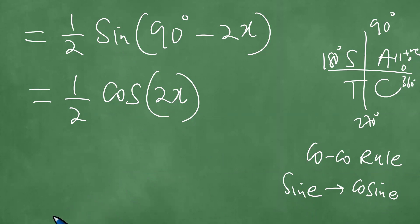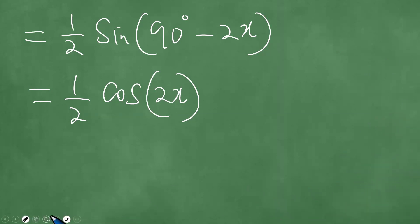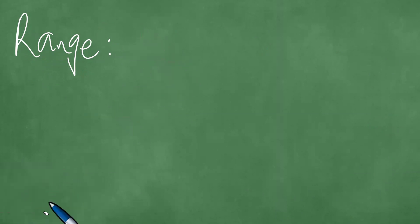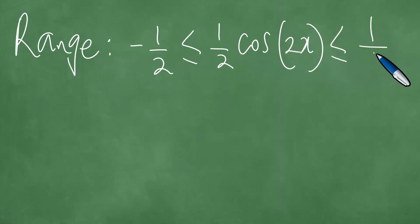So we have these exactly. Now, having had these, there are a couple of things that remain extremely important here — something we call the range. The range of this function is minus one half to one half. In other words, one half cosine 2x lies between minus one half and one half.